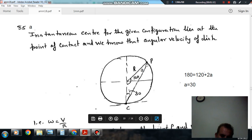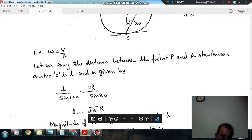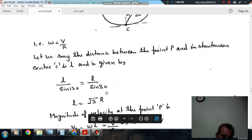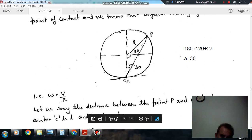Now from the triangle, we have R/sin(30) equals L/sin(120). So sin 120, we put the value of sin 120 and sin 30, then the relationship between L equals √3R. So this distance is √3R.